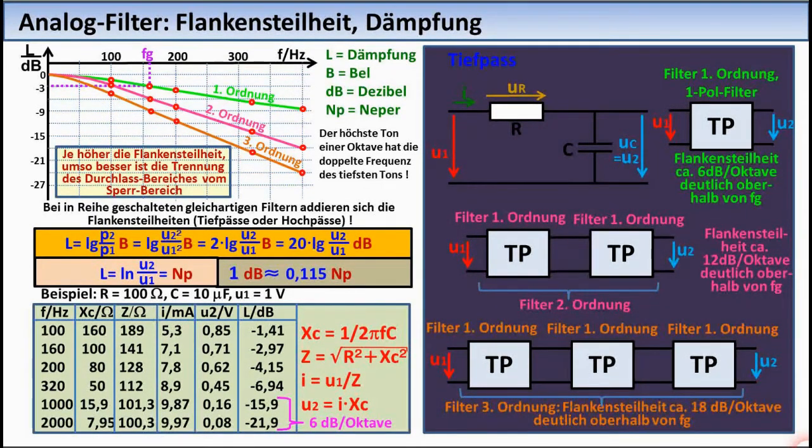With a good filter, the transition from the pass band to the stop band should be as steep as possible. This steepness is given in decibels per octave.